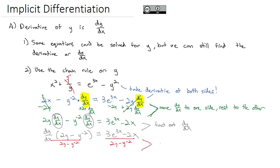And so to get to our final answer, we will divide to isolate the dy/dx. And we get that dy/dx is equal to the fraction 3e to the 3x minus 2x over 2y minus y to the negative 2.